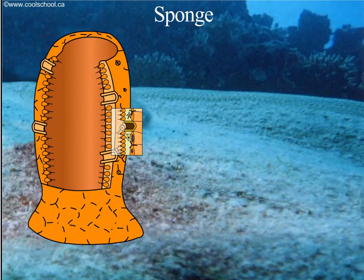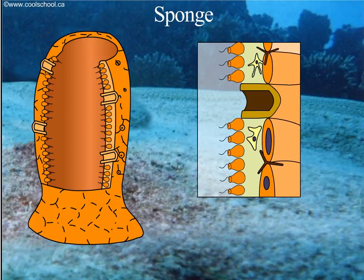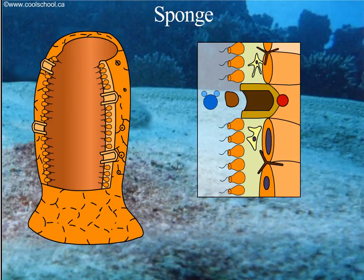To draw water into the central cavity, the flagella of the collar cells beat to create a current. Water, nutrients, and oxygen enter through the incurrent pores and stick to the collar cells.